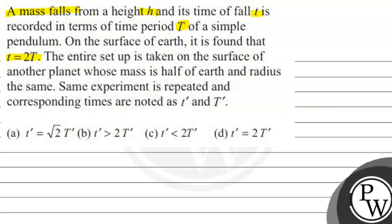The entire setup is taken on the surface of another planet whose mass is half of Earth and the radius is the same. The experiment is repeated and the corresponding times are noted as t' and T'.